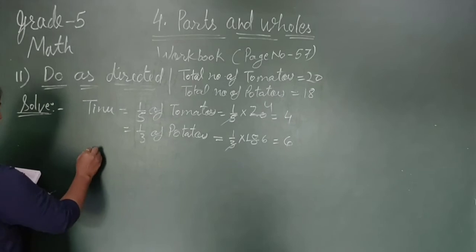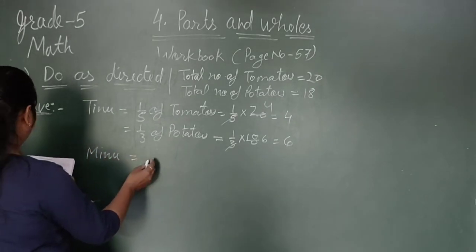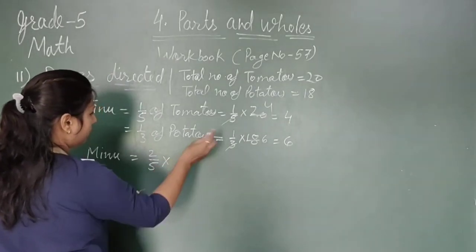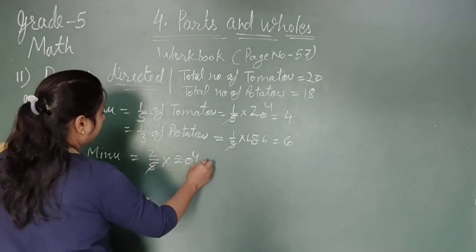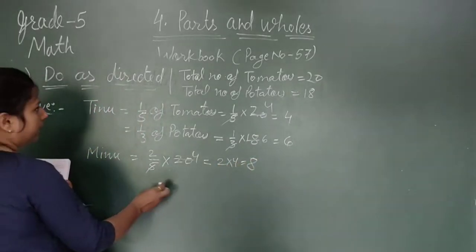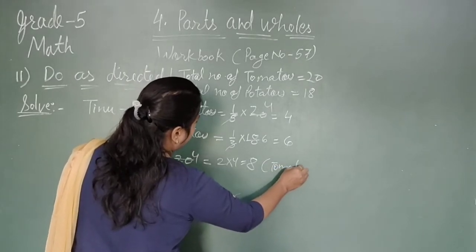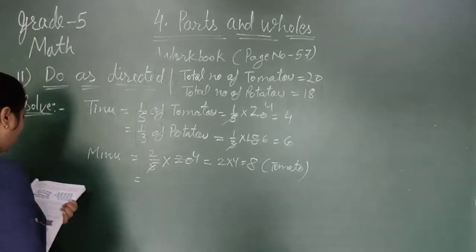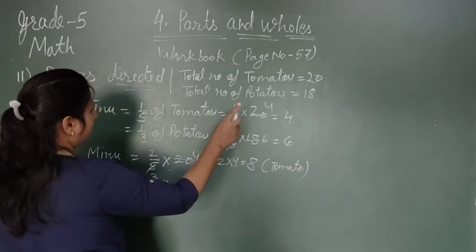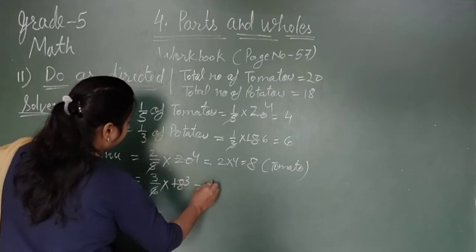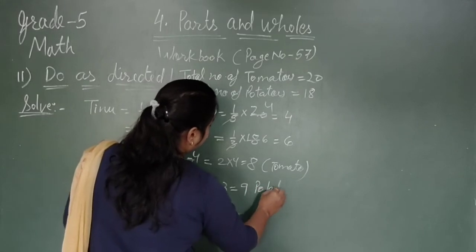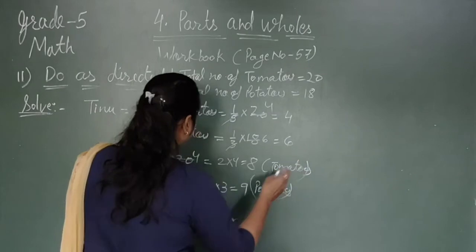Now go for the Minus part. Minus having two-fifths of tomatoes. Now three-sixths of, off means multiply, and the potatoes part is 18. Sixth into 18, three into three, three into six is nine. Nine potatoes she will get.